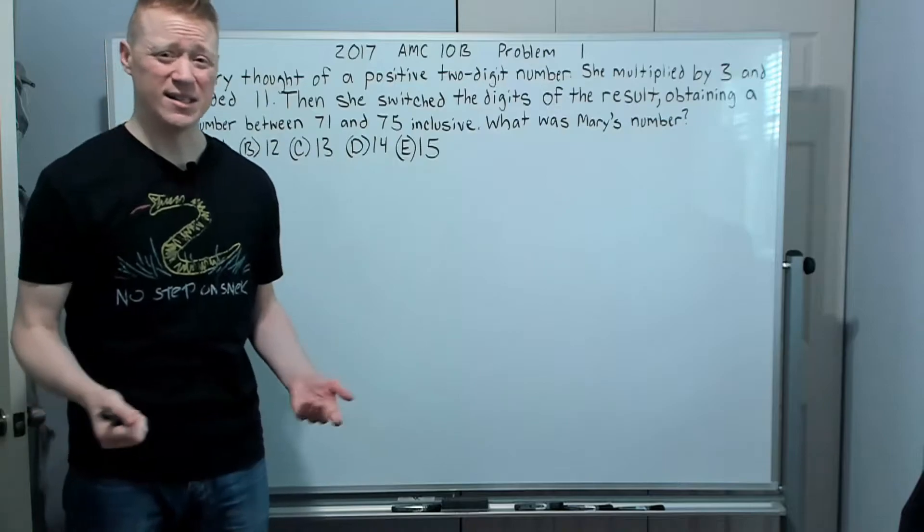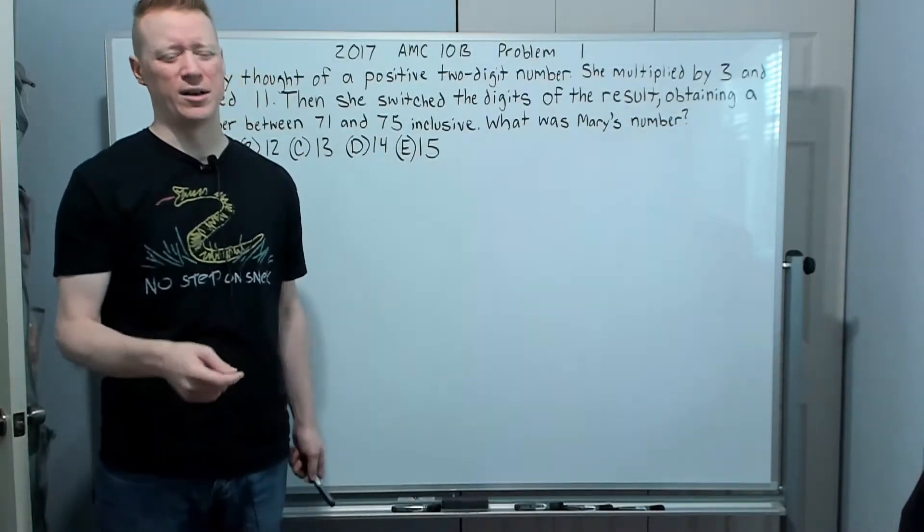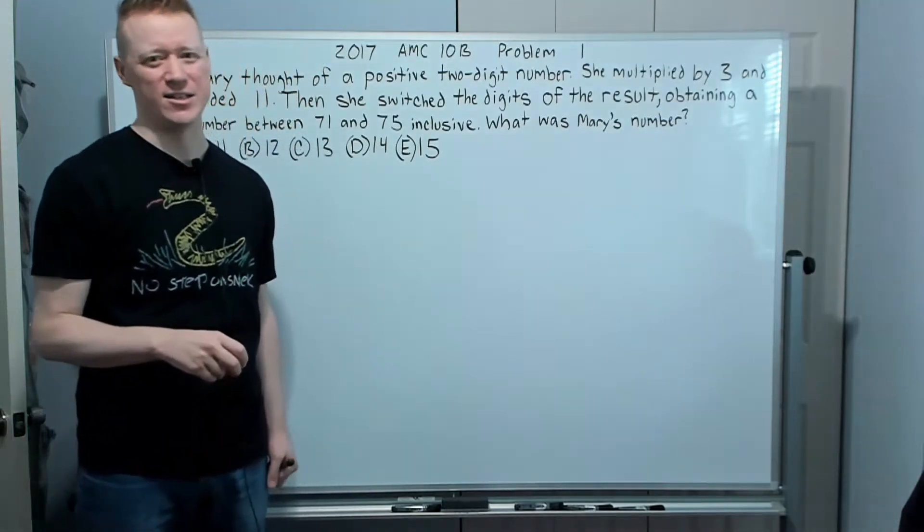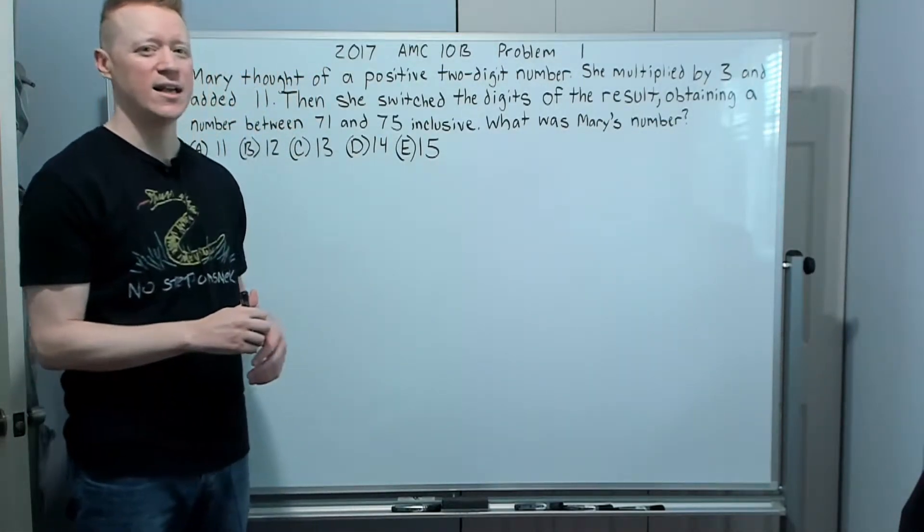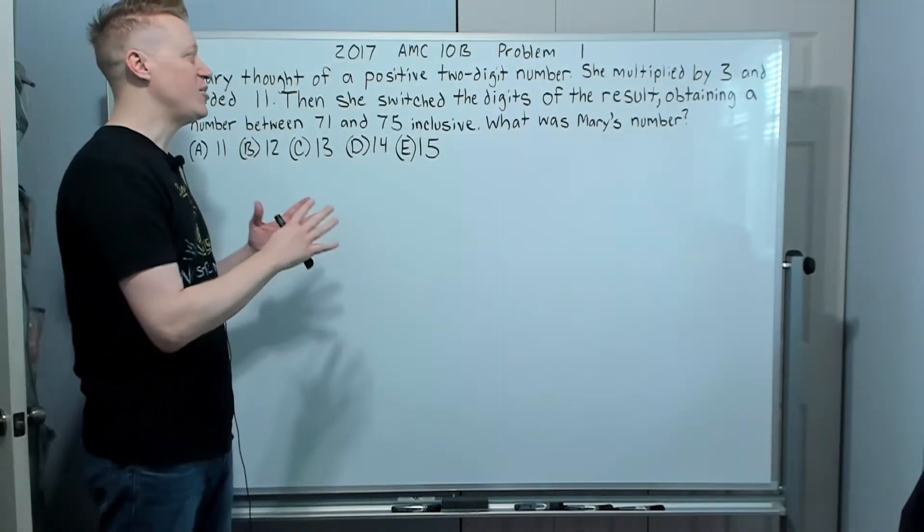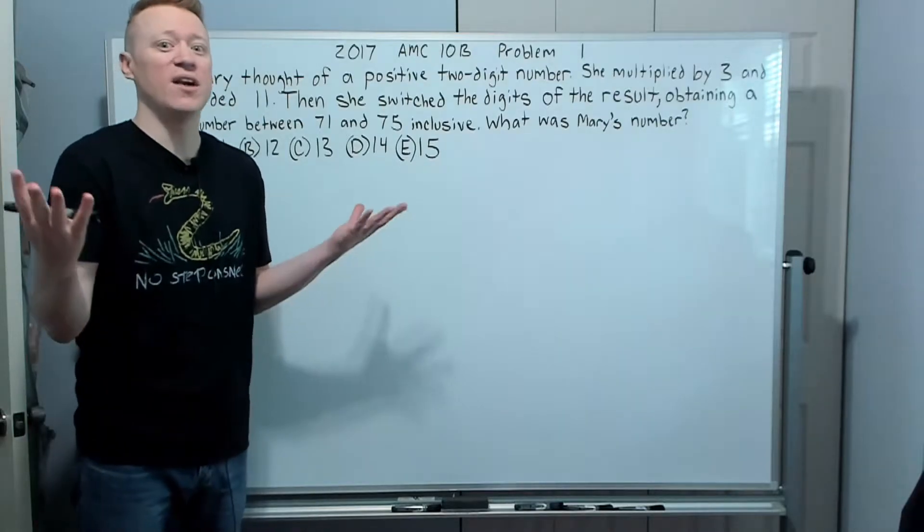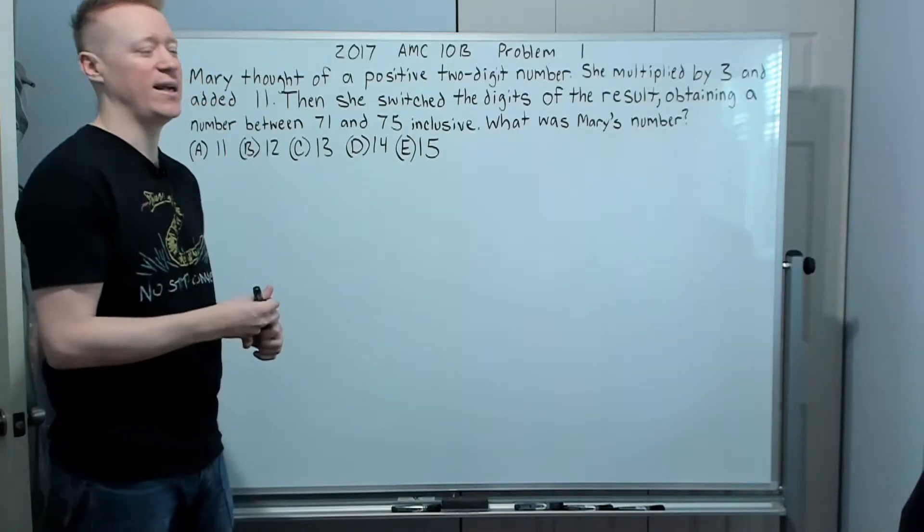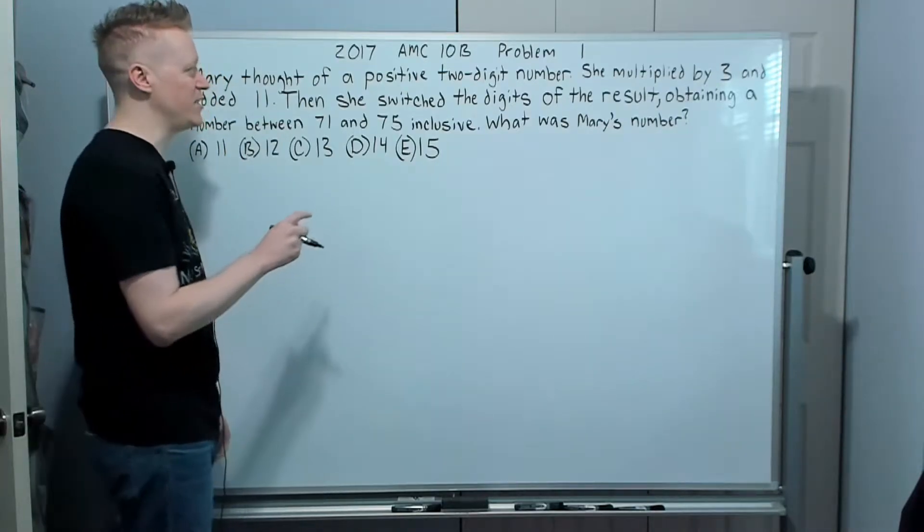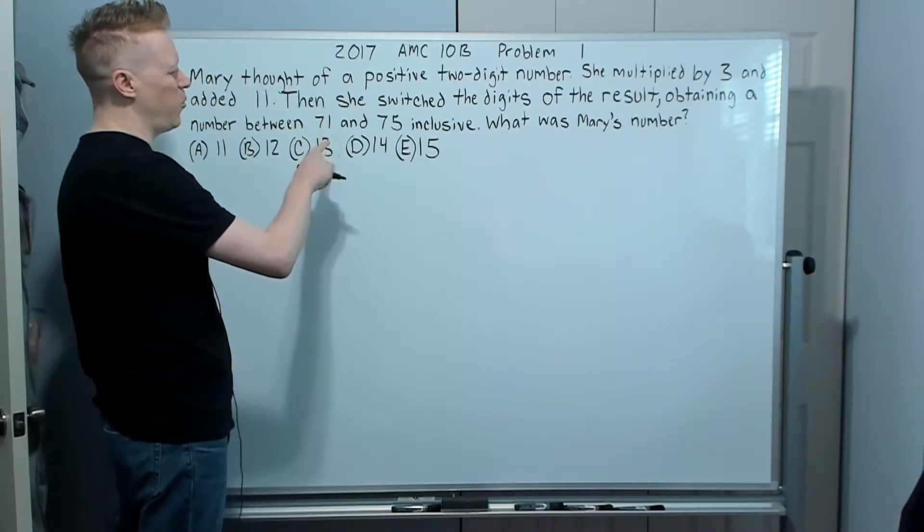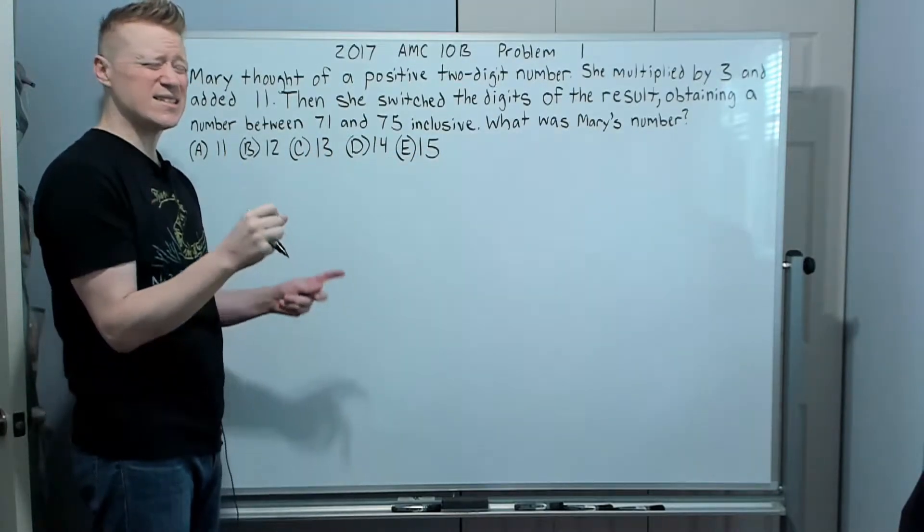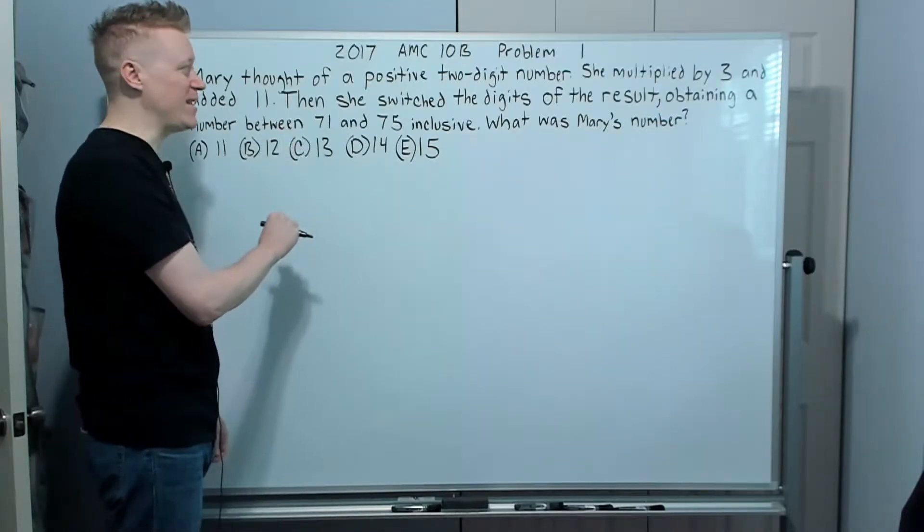Mary thought of a positive two-digit number. She multiplied by three and added 11. Then she switched the digits of the result, obtaining a number between 71 and 75 inclusive. What was Mary's number? You could try to do some complex algebra, but one thing you want to remember on a test like this, you're not showing your work to anyone. There's no teacher grading going, oh, you didn't show your work minus one half. This is the luxury of taking a competition test. You get to not show whatever work you want. You can do whatever you want.